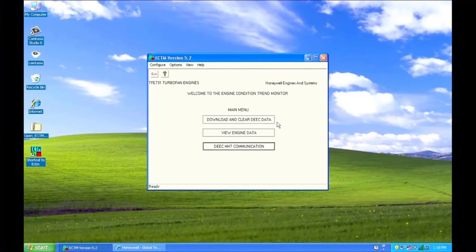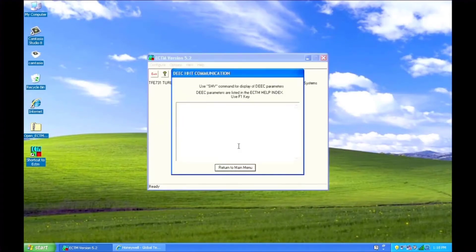Start ECTM and go to HHT Communication. Enter ENG. You'll be asked if you want to set up the DEEC. Enter Y for yes.